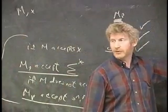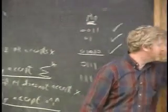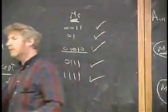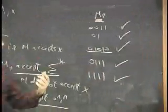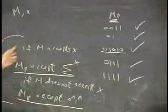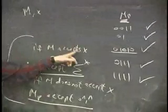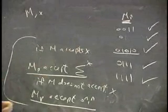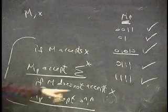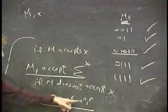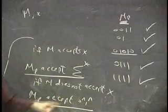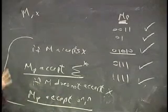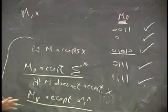What MP does is look at its input. If it's 0^n 1^n, it accepts it. Otherwise, it runs M on x — the original — and if that gets accepted, it accepts everything. Otherwise, it accepts nothing else, and just gives me 0^n 1^n. Does that give a bigger picture?